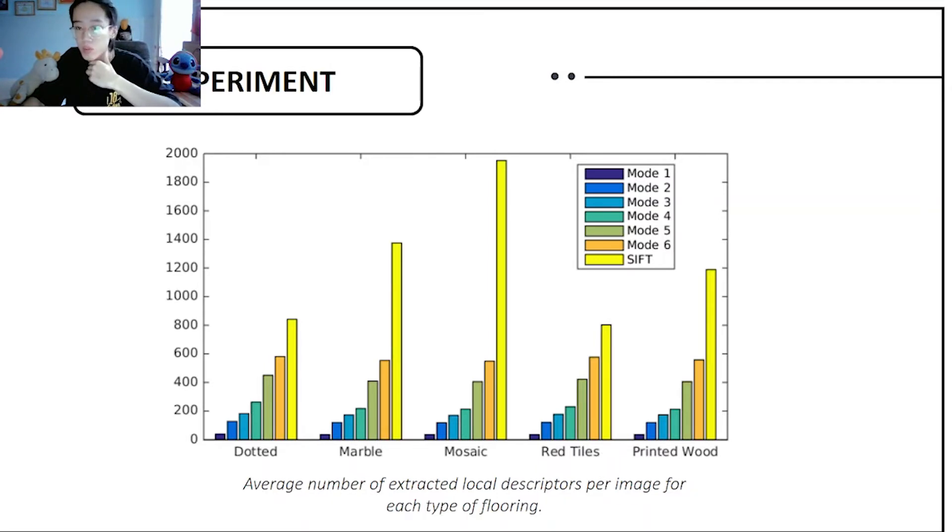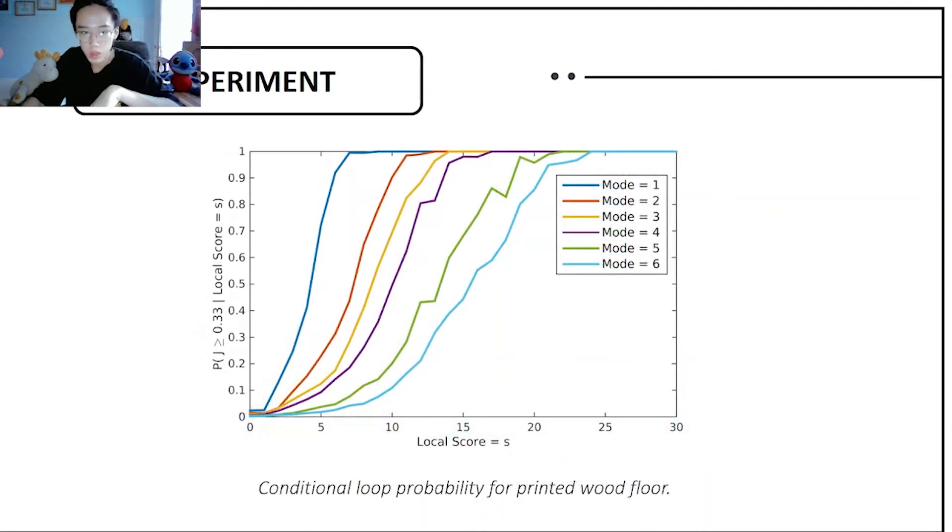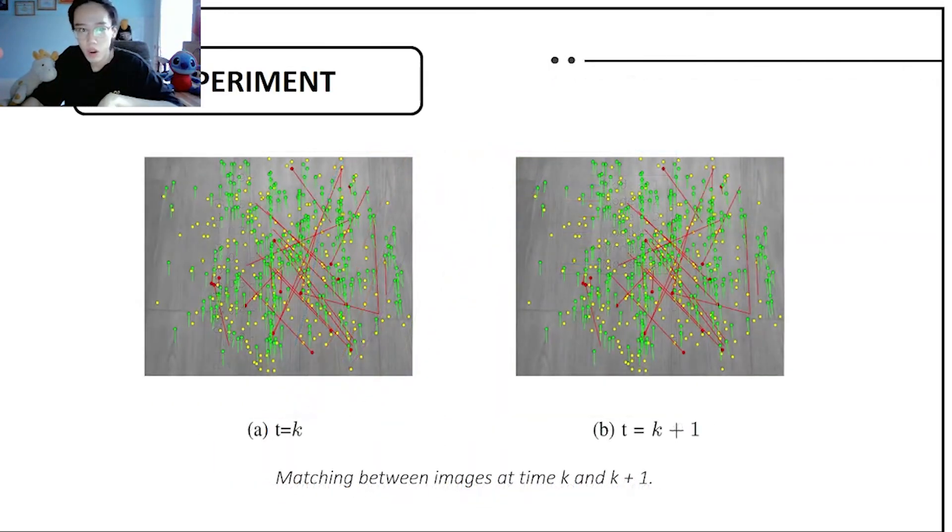It is experiment three: threshold window conditional loop probability for vintage laminated flooring. It is conditional loop probability for vintage loop. Experiment four is matching between the image at time k and k minus one. Key points are indicated as dots, yellow dots represent non-matching features, green lines indicate correspondences between matches, red lines are outliers.